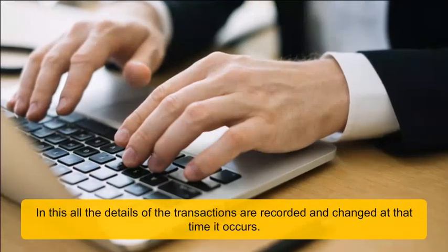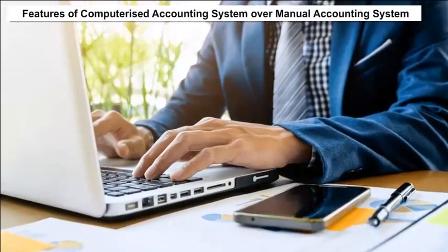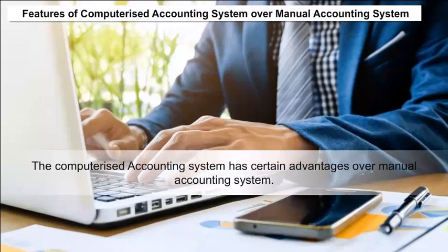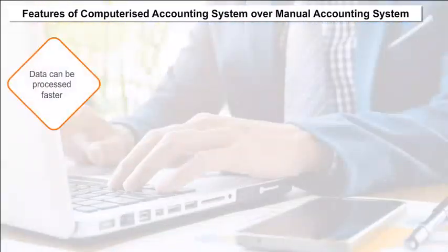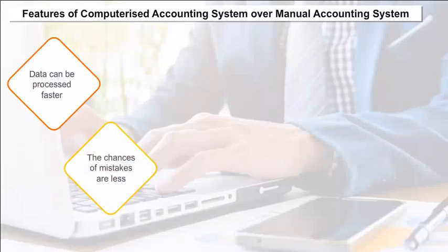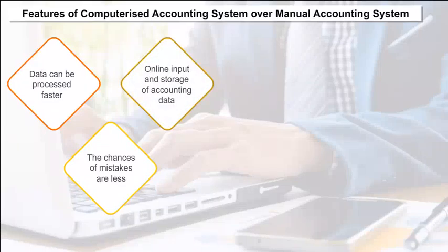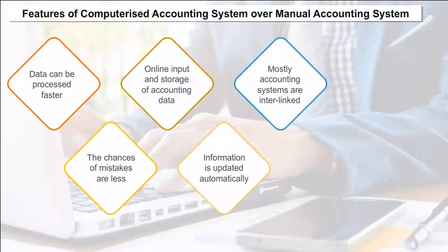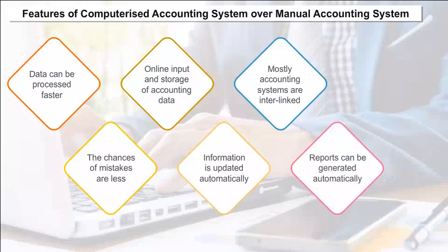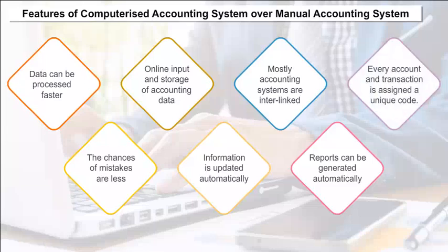Features of the Computerized Accounting System over Manual Accounting System: accounting data is processed faster in computerized accounting as computers can perform tasks at a faster speed. The chances of mistakes are less as primary data is entered once for all processes. Online input and storage of accounting data means information is updated automatically. Mostly accounting systems are interlinked, facilitating availability of information to various users at the same time. Reports can be generated automatically, and every account and transaction is assigned a unique code.